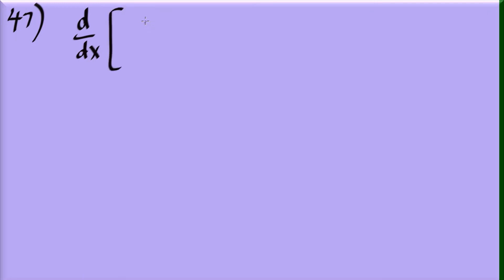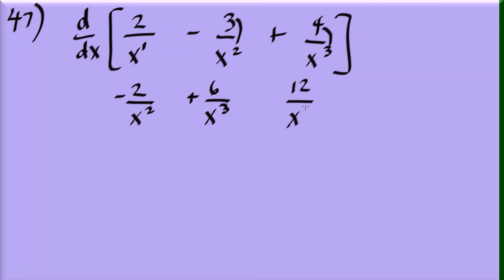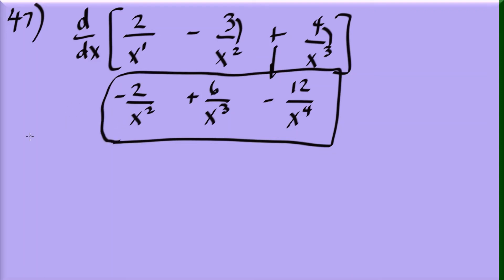Another shortcut is the reciprocal rule. For 2 over x minus 3 over x squared plus 4 over x cubed: multiply the coefficient by the exponent, increase the exponent by 1, and switch the sign. Result: negative 2 over x squared, plus 6 over x cubed, minus 12 over x to the 4th.